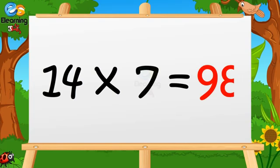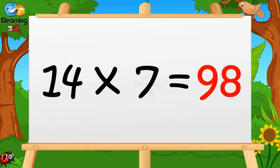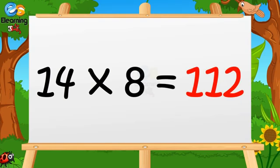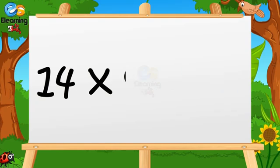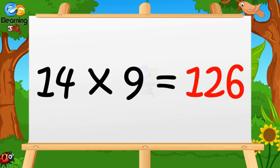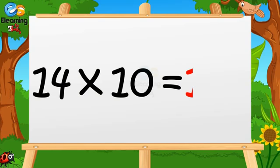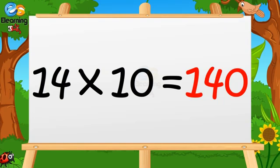Fourteen sevens are ninety-eight. Fourteen eights are one hundred twelve. Fourteen nines are one hundred twenty-six. Fourteen tens are one hundred forty.